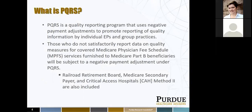First off, what is PQRS? PQRS is a quality reporting program that uses negative payment adjustments to promote reporting of quality information by individual eligible providers or EPs and group practices. Those who don't satisfactorily report PQRS measures for covered Medicare physician fee schedule services furnished to Medicare Part B beneficiaries will be subject to a negative payment adjustment. Railroad Retirement Board, Medicare secondary payer, and critical access hospitals, or CAH method 2, are also included in PQRS reporting.